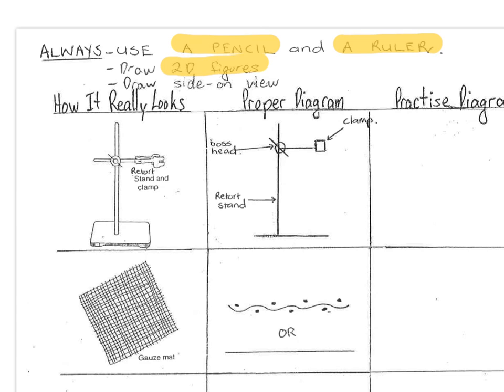And the other golden rule is there must be a side-on view. I do not want you to draw them done at an angle, or done from above, or even done from below. So they're our golden rules that we're going to be referring back to.